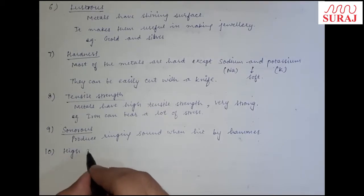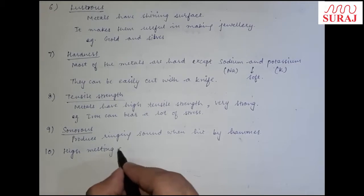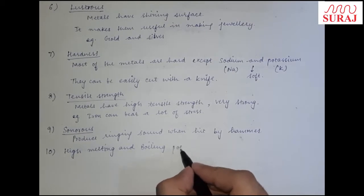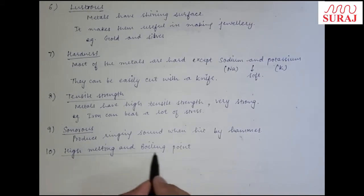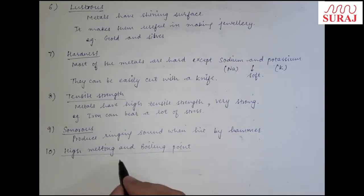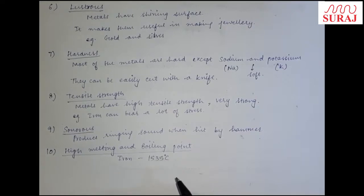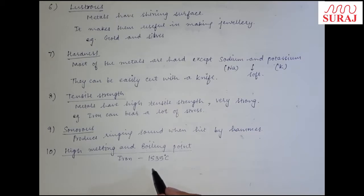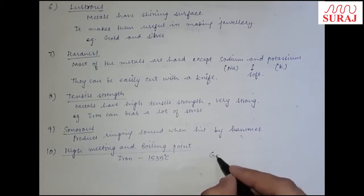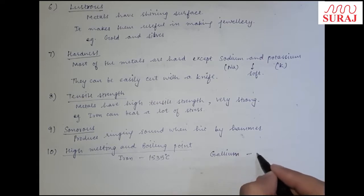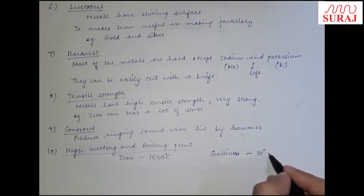Next is high melting and boiling point. Most metals have a high melting and boiling point. For example, iron का melting point 1535 degree Celsius होता है। But some metals have very low melting points — like gallium, जिसका melting point almost 30 degree Celsius है।